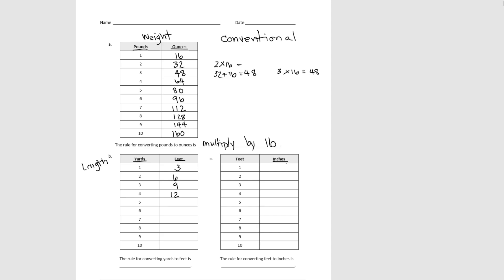Continuing: 5 yards would be 15 feet. 6 yards would be 18. 7 yards, 21. 8 yards, 24. 9 yards, 27. And 10 yards, 30. Basically we're skip counting by 3, since each additional yard adds 3 feet. So for converting from yards to feet, the rule is to multiply by 3.